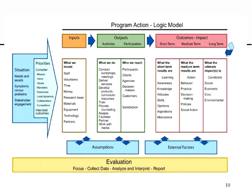Now we're getting into more visually appealing and colorful logic models. This example shows inputs, outputs, and outcomes with arrows, boxes, and colors. It also includes assumptions about inputs and outputs at the bottom, and external factors that could influence outcomes. Recall from the performance measurement discussion that some managers are afraid to be held accountable to outcomes because they don't completely control them — they only control activities and outputs. Those external factors can indicate other things that influence whether outcomes achieve their targets.